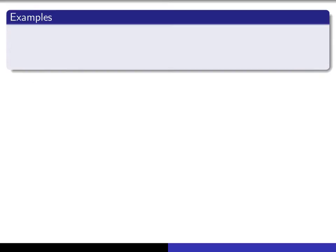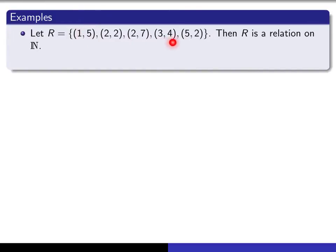So let's look at a few examples of relations. Here we have a set of ordered pairs. Each of the ordered pairs is an element of N cross N, and so this is a relation on N.